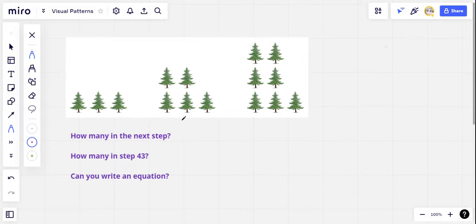If you've been following these, you probably will get this one pretty easily. But your challenge, if you choose to accept it, is to predict what happens in the next step. So here's step one, here's step two, here's step three. There are more trees every step, so how many trees exactly are going to be in step four? That would be part of the challenge. A harder challenge would be to predict how many in step 43, pretty far down the line in the number of steps.